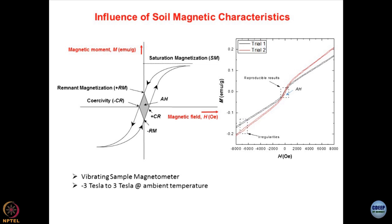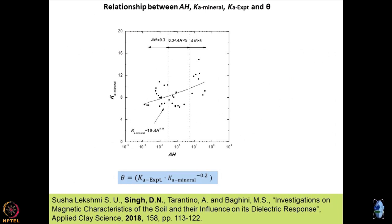Just a quick way to analyze the results: the area of the hysteresis curve has been linked with the dielectric coefficient of the minerals. Once you have magnetized and demagnetized the soil, it can be linked with K value — the dielectric constant. And once you know the K value, it can be linked with theta, which is the volumetric moisture content of the soil.